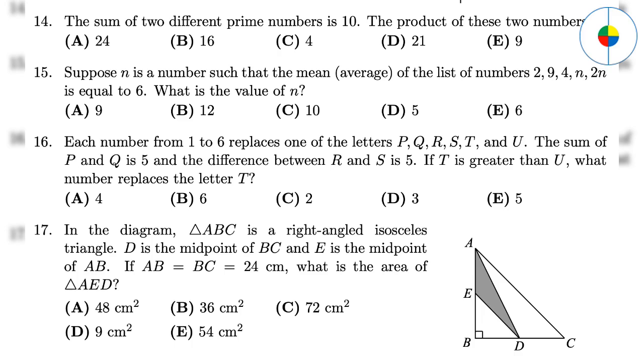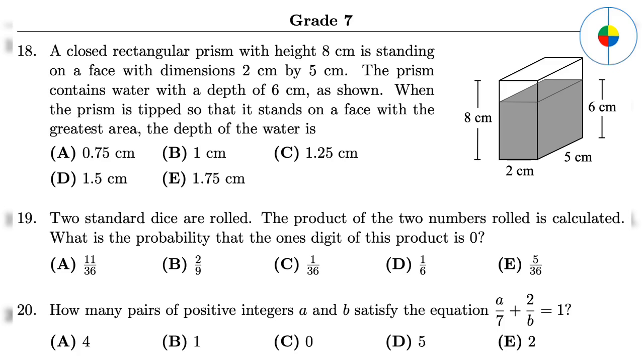Question 17: This is to calculate the area of the triangle. The base ae is 12 and the height bd is also 12, so the area is 72. Question 18: First, you need to calculate the volume of the water, which is 2 times 5 times 6 equals 60. The greatest area of base is 8 times 5 equals 40, so the depth is 60 over 40 equals 1.5.